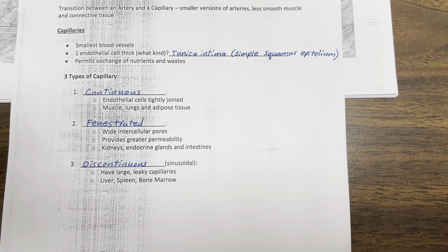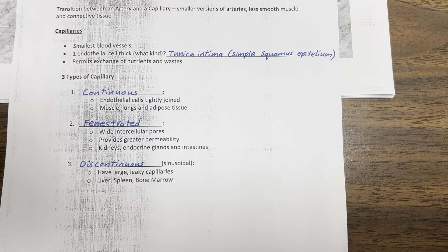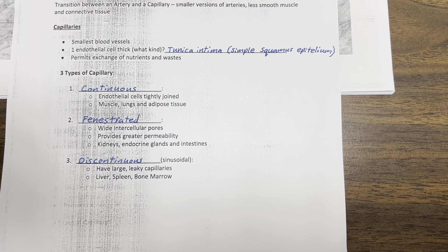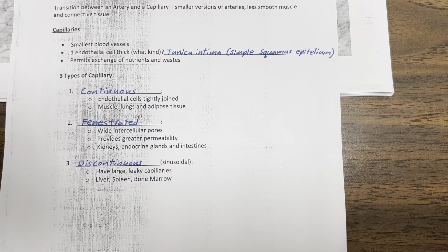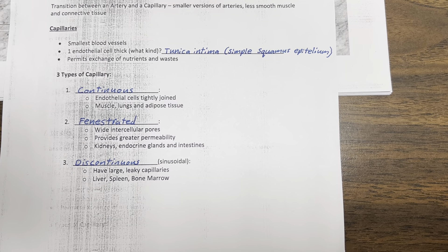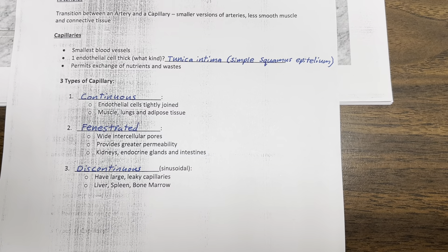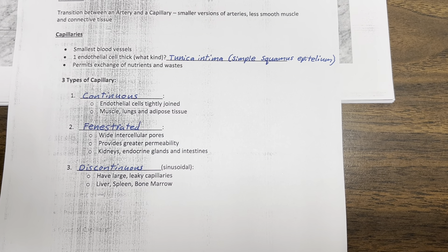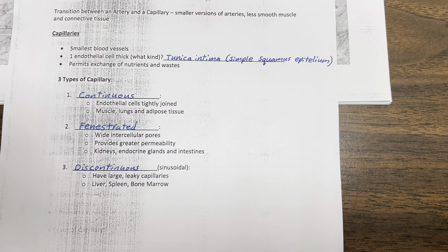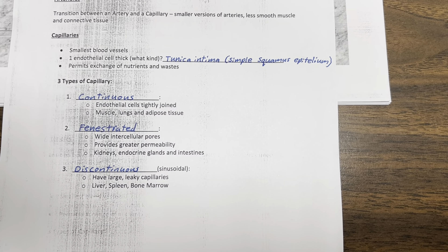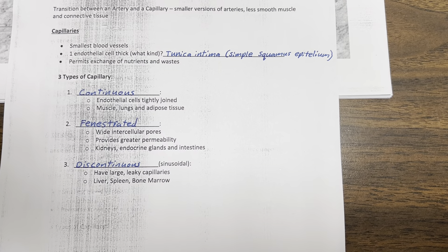Continuous capillaries have endothelial cells that are tightly joined, and are found in the muscles, lungs, and adipose tissue.